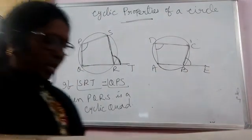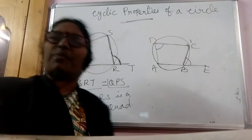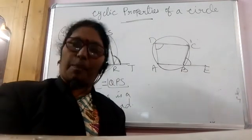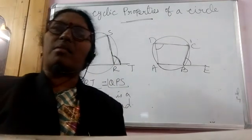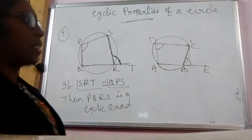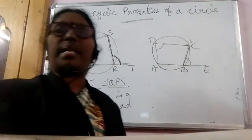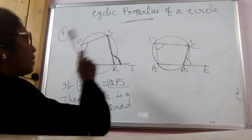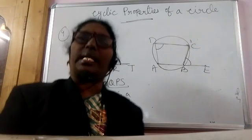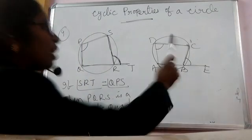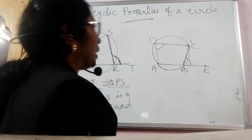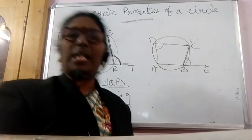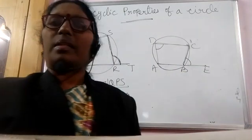So with this we have come to the end of the cyclic properties of the circle. What we have learnt: first, the opposite angles of a cyclic quadrilateral are supplementary; second, if the opposite angles of a quadrilateral are supplementary then the quadrilateral is cyclic; third, the exterior angle of a cyclic quadrilateral is always equal to its interior opposite angle; fourth, if the exterior angle equals the interior opposite angle of a quadrilateral, then the quadrilateral is cyclic. Thank you.